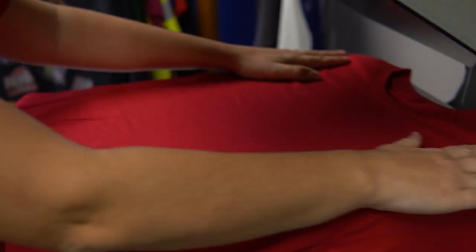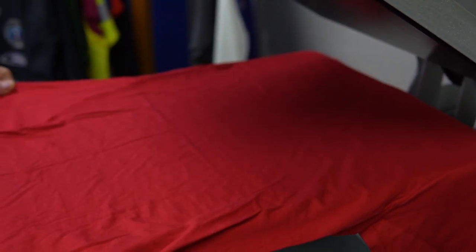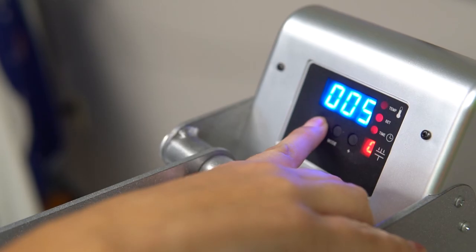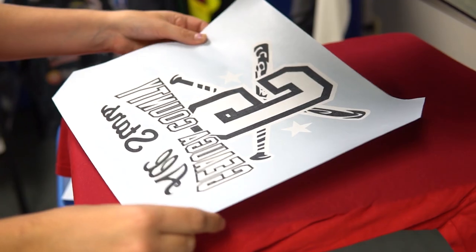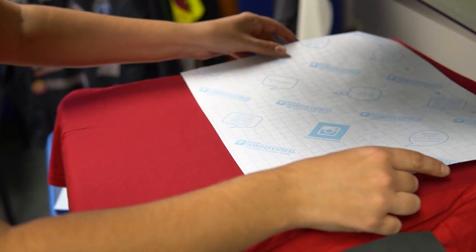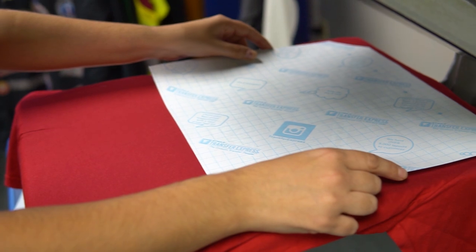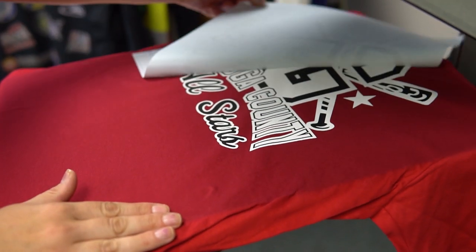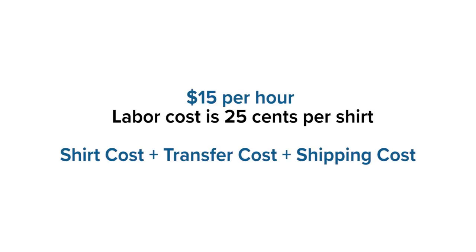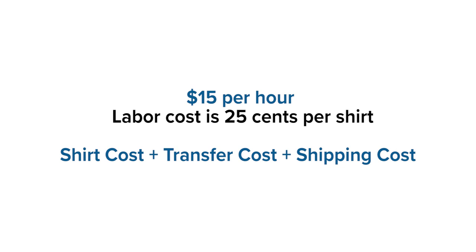To calculate your direct labor — like using Goof Proof for 4 seconds — the time to load your shirt and put the transfer on the press is going to take you about 1 minute per shirt. So if you charge $15 an hour, your labor cost is $0.25 per shirt.